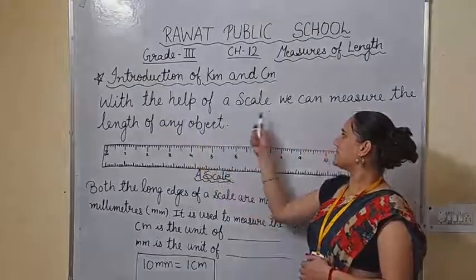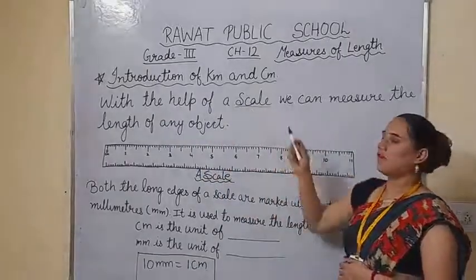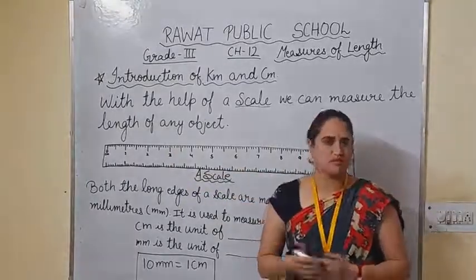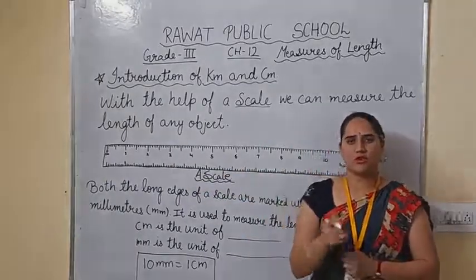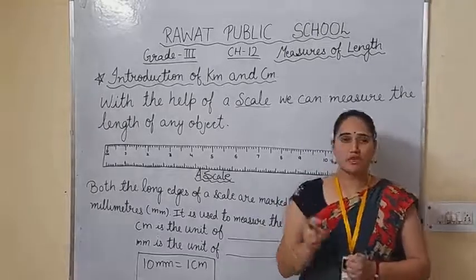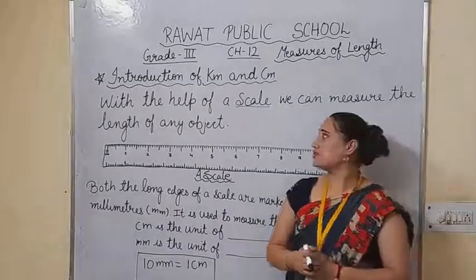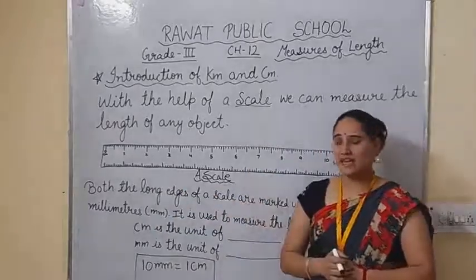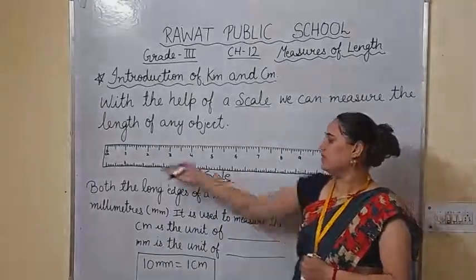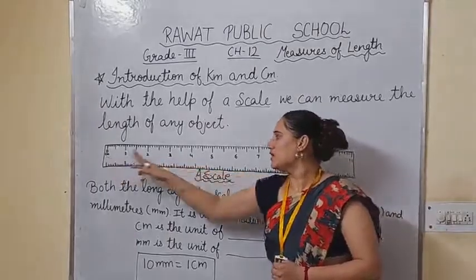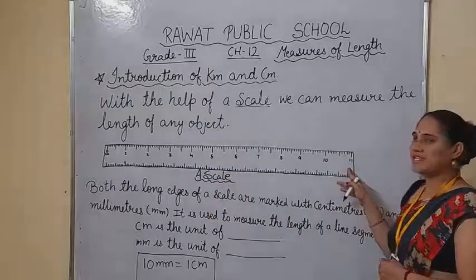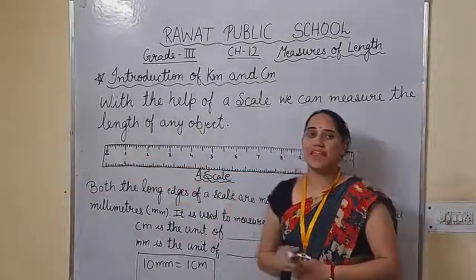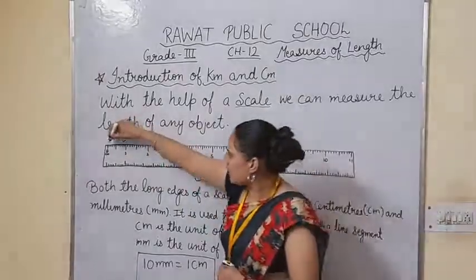With the help of a scale, we can measure the length of any object. You can choose any object by yourself, and to measure the length of any object we need a scale. So here I am drawing one scale. As you can see, I am writing numbers 0 to 11 on the scale. And between 0 to 1, there are total 10 lines — 10 small lines you can see.